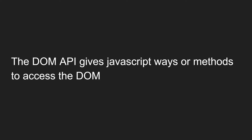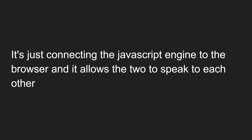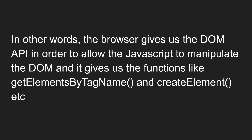The DOM API gives JavaScript ways or methods to access the DOM. It provides the JavaScript engine with different methods to access the DOM. It just connects the JavaScript engine to the browser and allows the two to speak to each other. The DOM API connects the JavaScript engine with the DOM so that both can communicate within the browser.